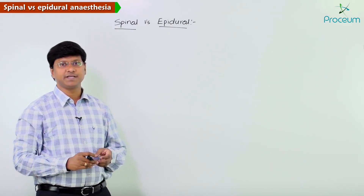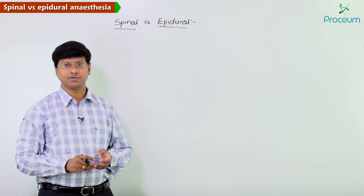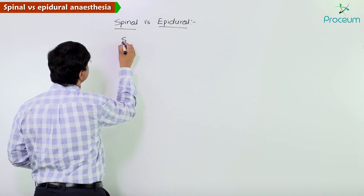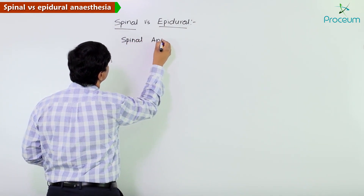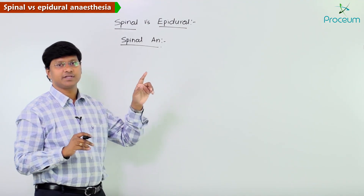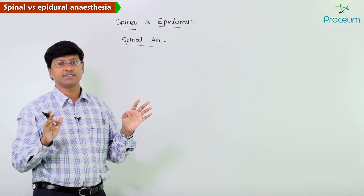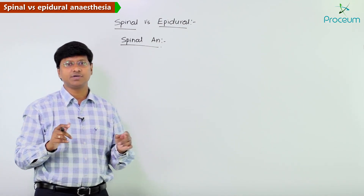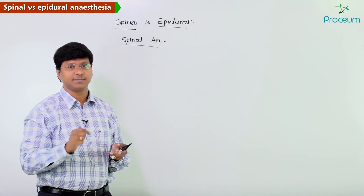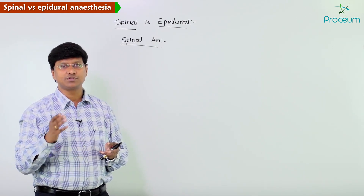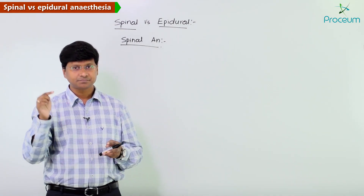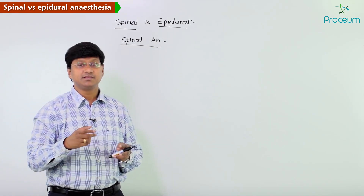Now let me compare spinal anesthesia versus epidural anesthesia. The first advantage of spinal anesthesia is that it is highly reliable. The reason it is highly reliable is because it is very easy to place the needle into the subarachnoid space, and the onset of action is also very quick. Once we place the needle into the subarachnoid space, this can be confirmed.